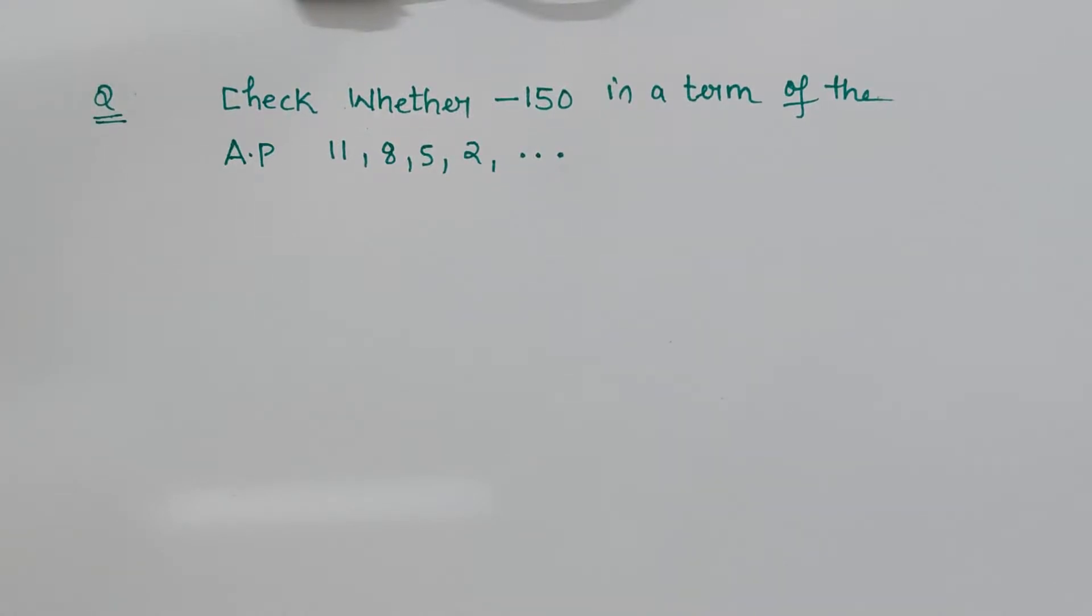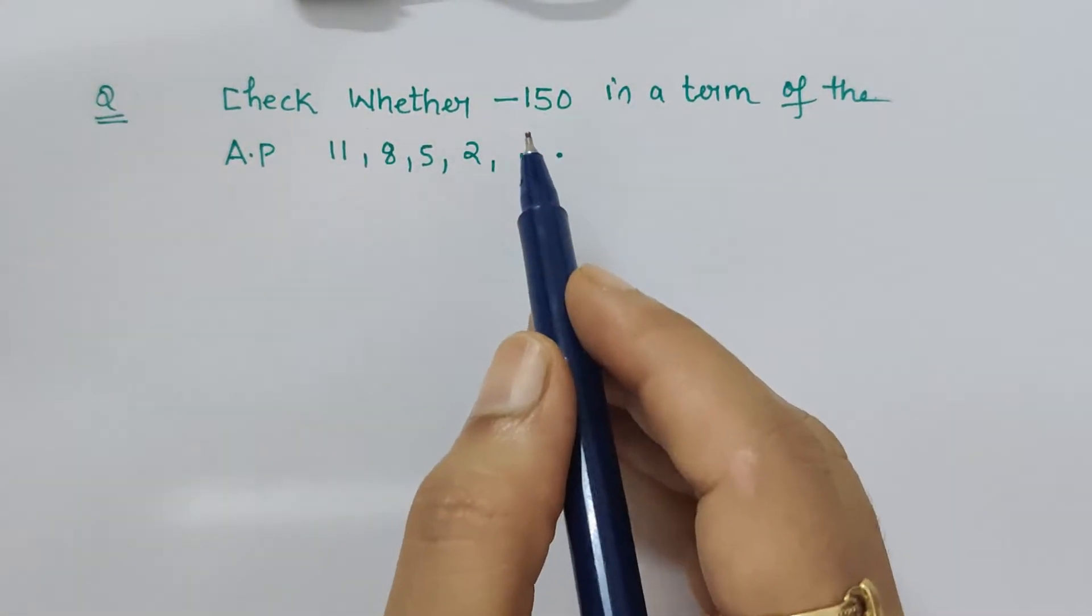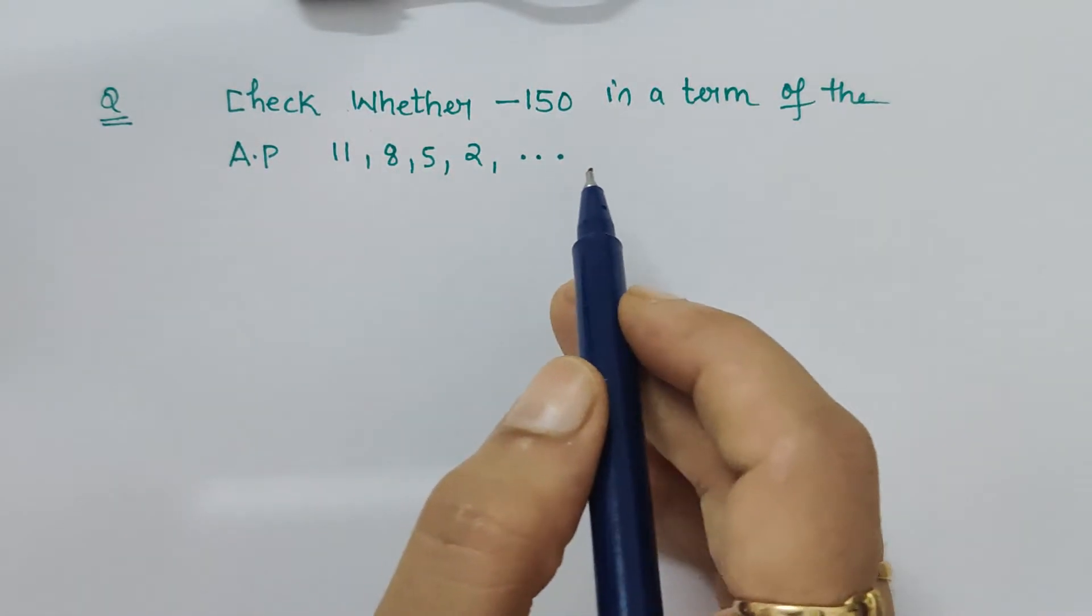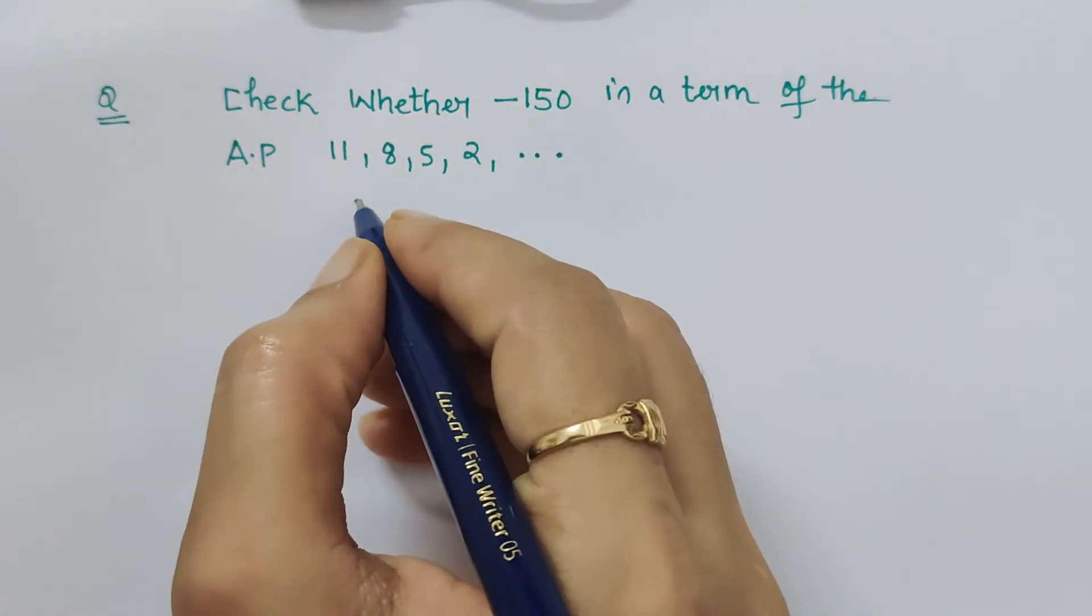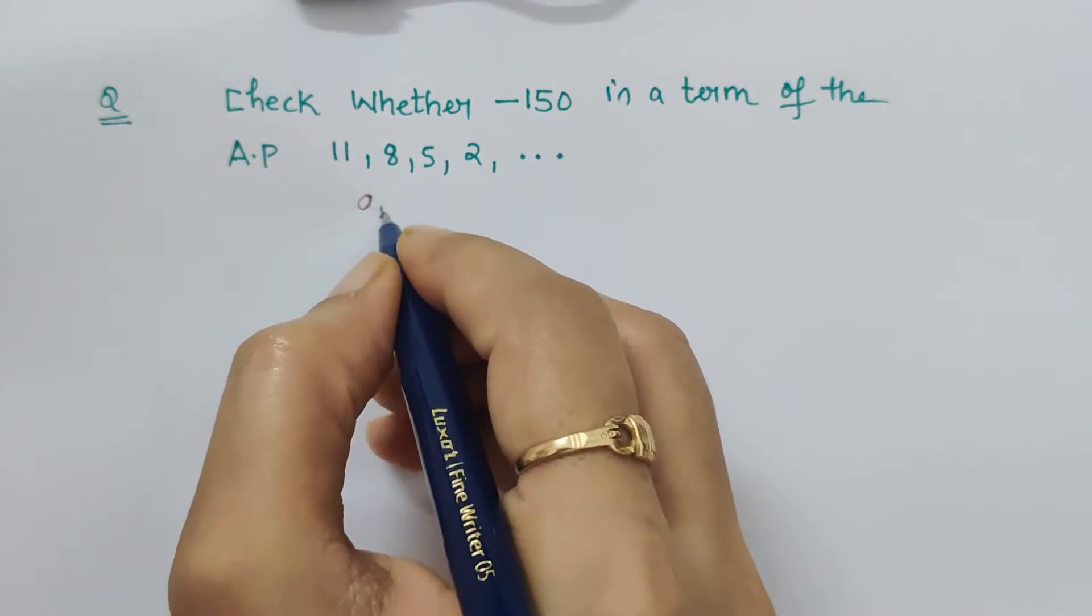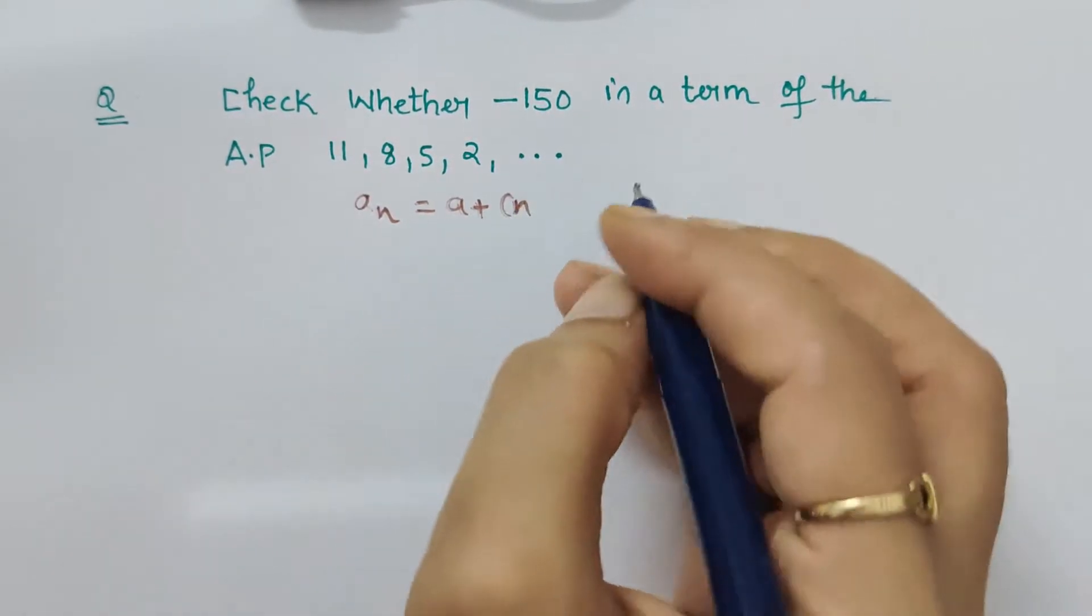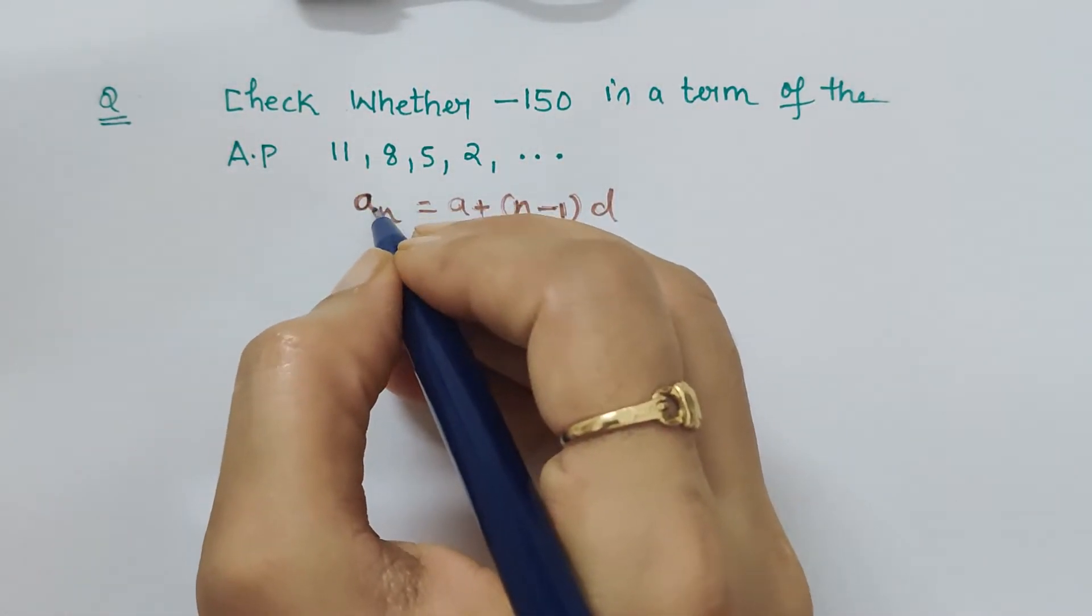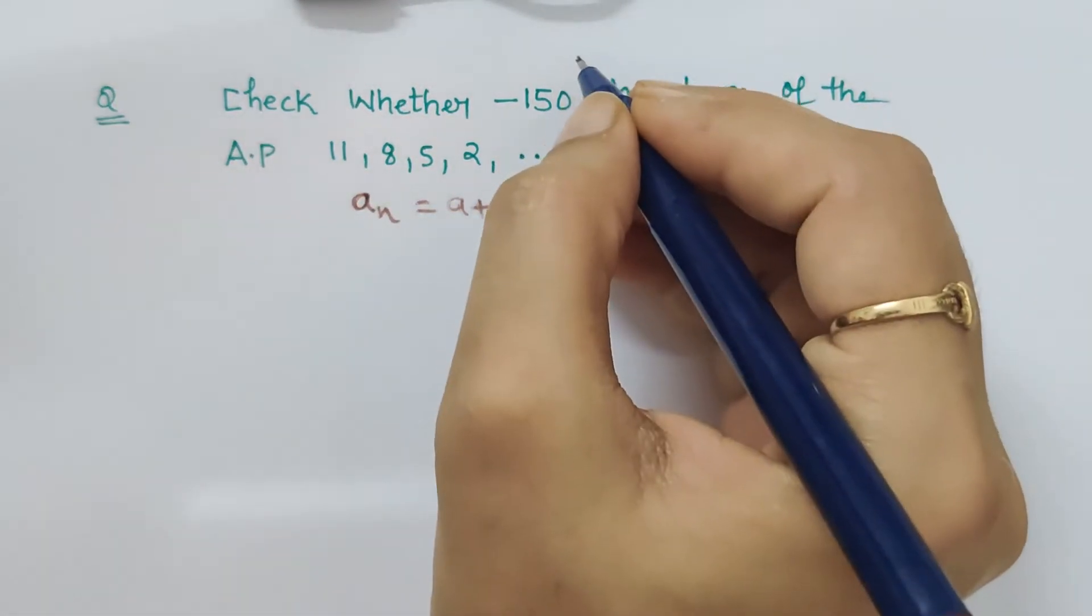Hello friends, I am here with another question. Check whether -150 is a term of the AP 11, 8, 5, 2, and so on. The formula that we will be using is a_n equals a plus (n-1) times d. This formula we are going to use, so here we have to check for this term.